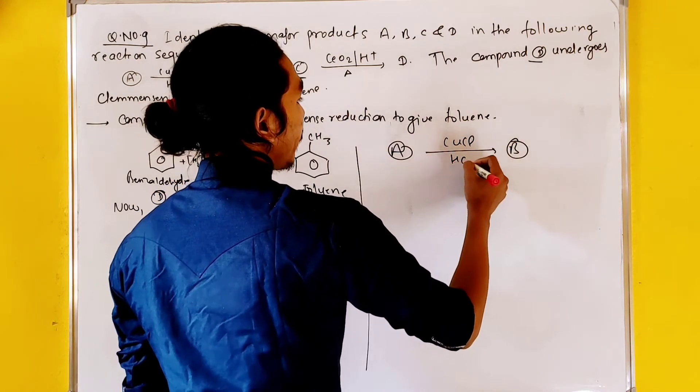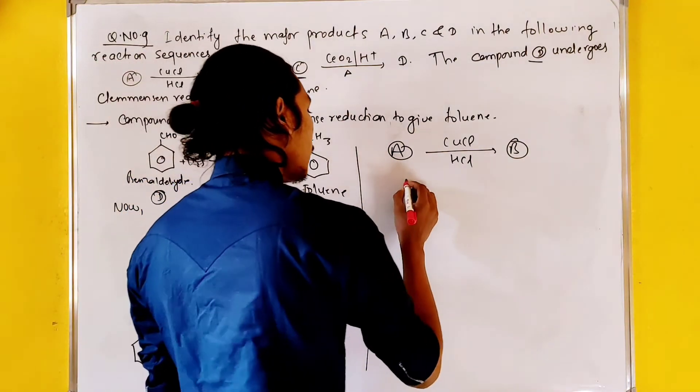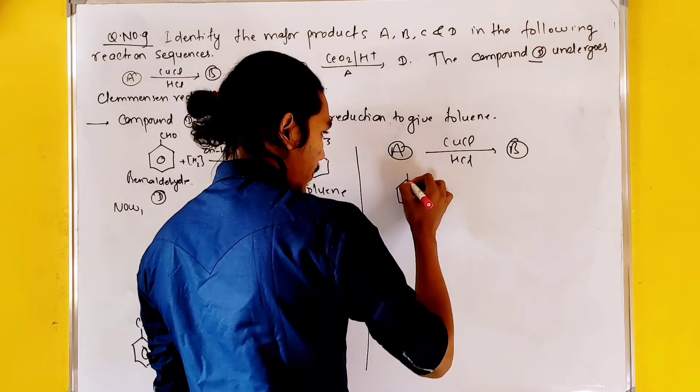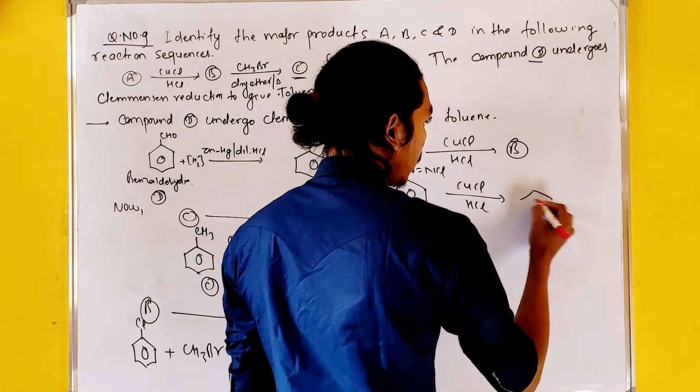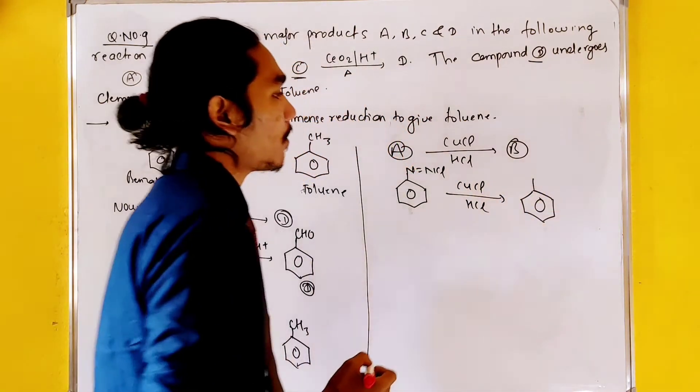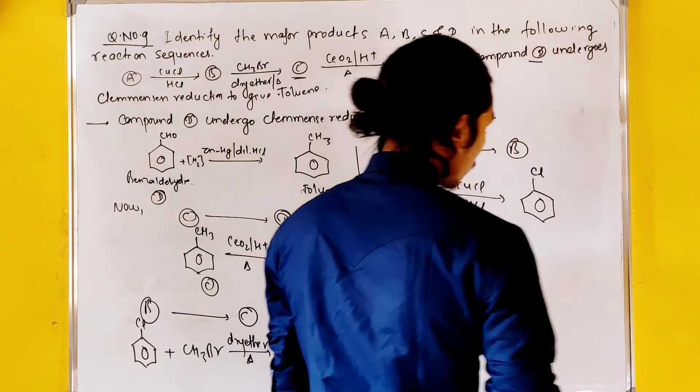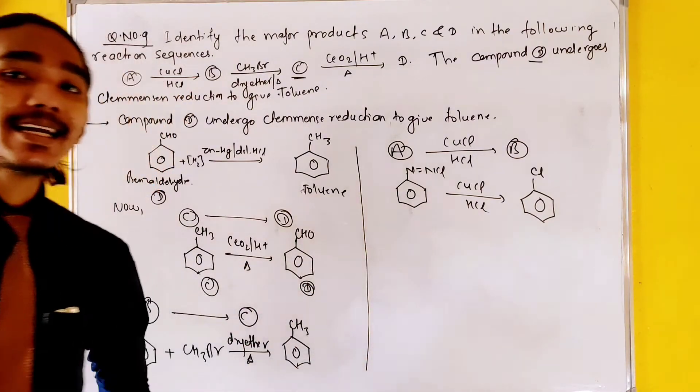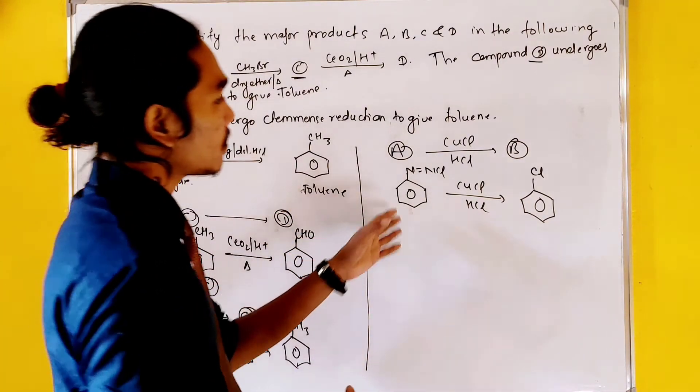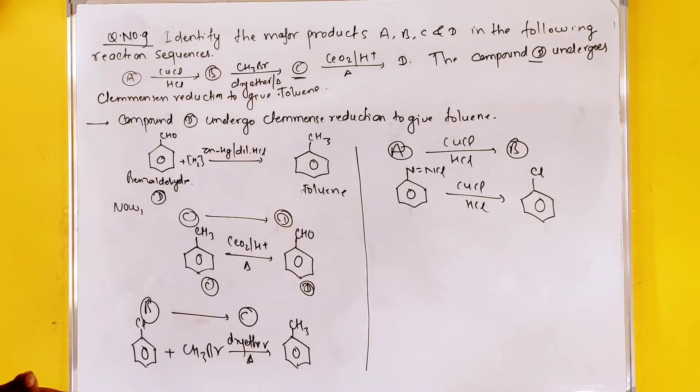Now we put the formation of toluene from B. Copper chloride and HCl, this is why we put the compound of benzene diazonium chloride, N double bond NCl. This is why we put the compound. So we put the reaction that is called chlorine.